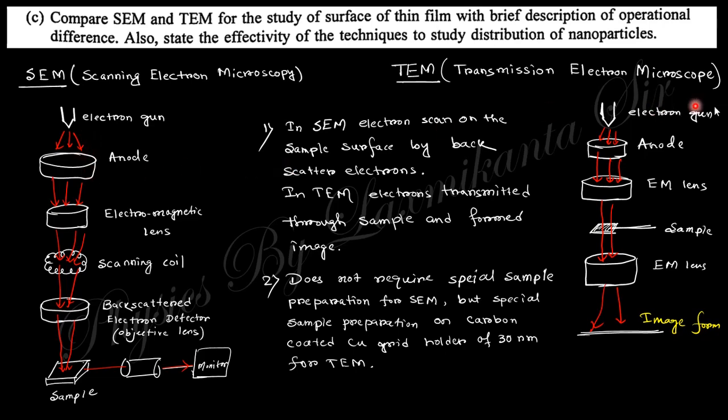Here, for SEM, the scanning coil is used to scan the point of the sample. If you rotate this scanning coil, the point of scanning of the sample will be changed. You can see the sample in this position. The backscattered electrons from the sample are collected by this lens and then detected and then imaged into monitor.